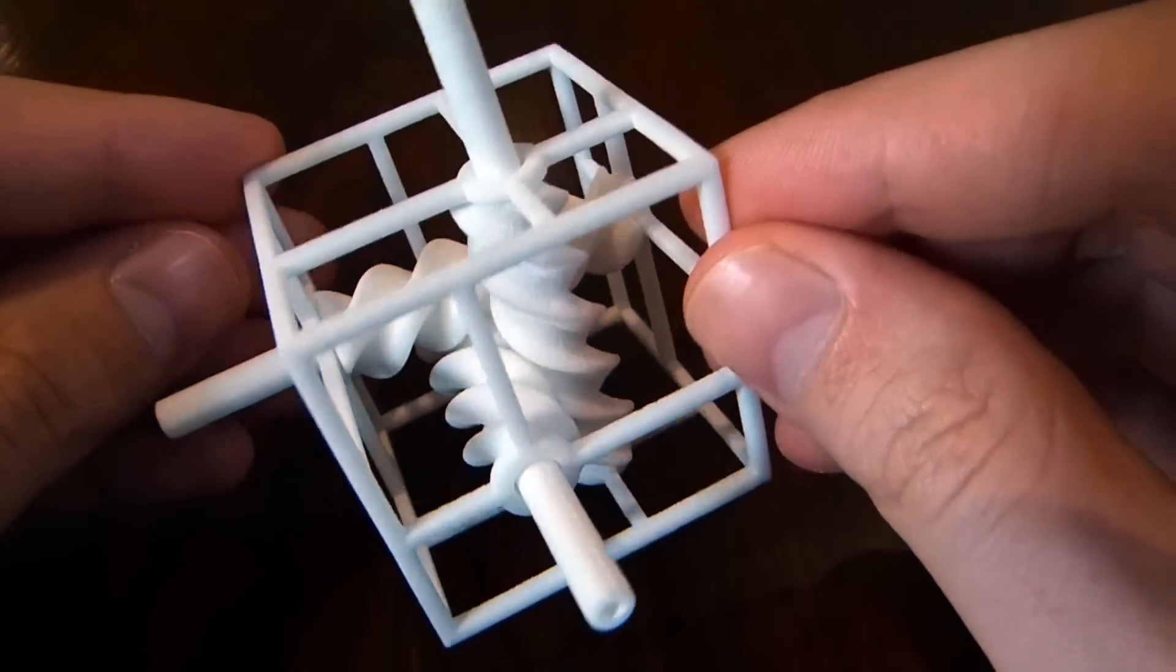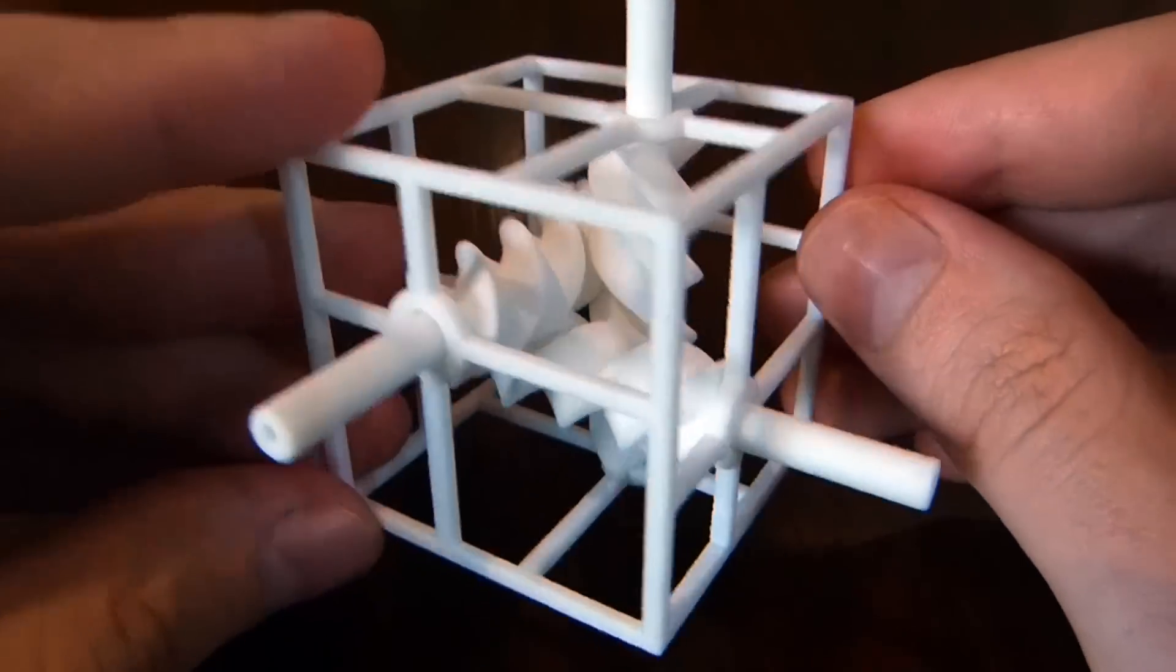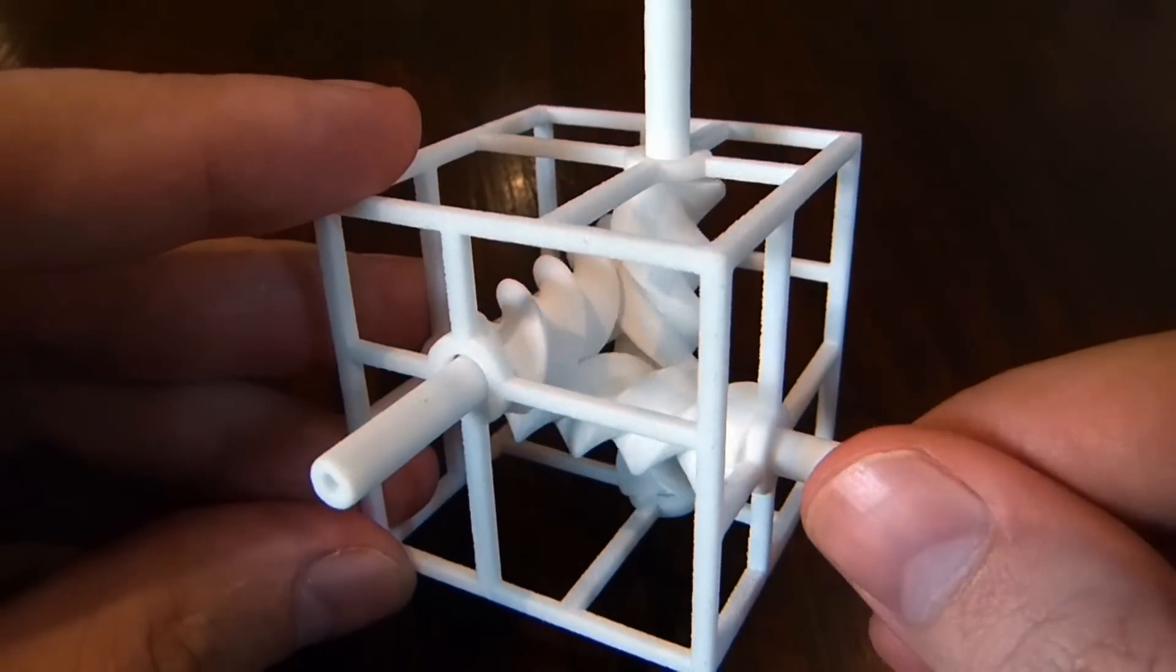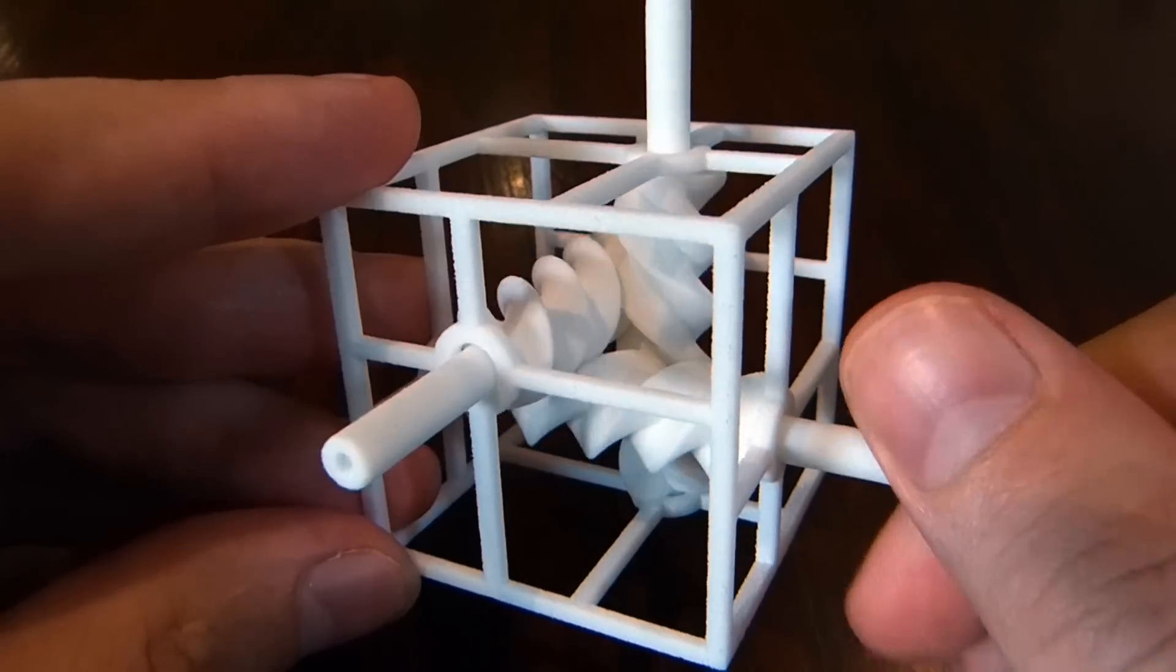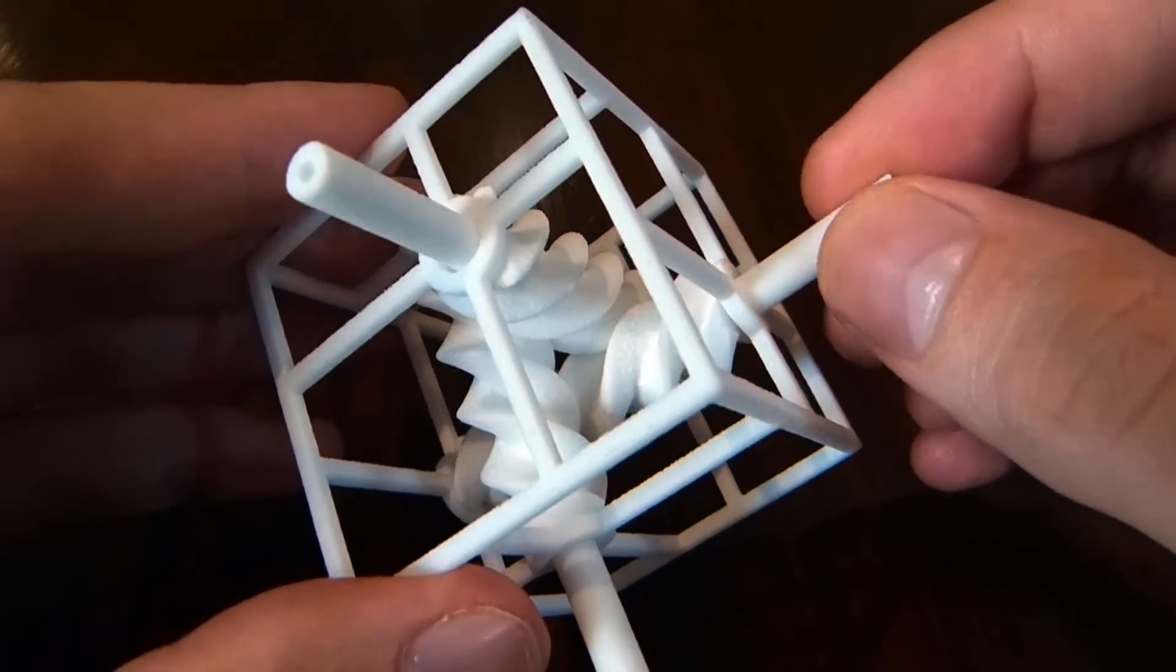So there's a cubicle frame, and there are three helices, and they all mesh into each other pairwise, and so turning any one of them will turn the other two.